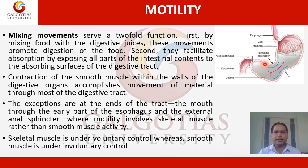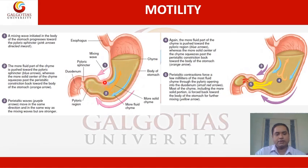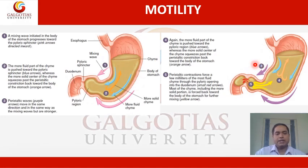Skeletal muscle is under voluntary control, whereas smooth muscle is under involuntary control. The motility can be understood using a figure showing a mixing wave initiated in the body of the stomach that progresses towards the pyloric sphincter. The more fluid part of the chyme is pushed towards the pyloric sphincter, whereas the more solid center of the chyme squeezes past the peristaltic constriction back towards the body of the stomach. The peristaltic wave moves in the same direction as the mixing wave but with greater amplitude.